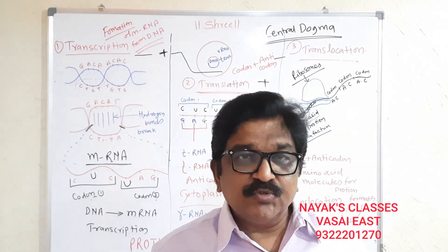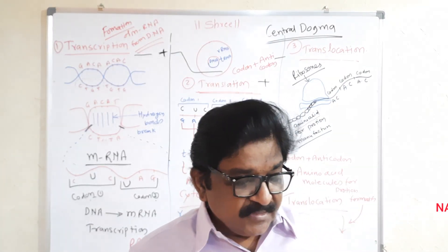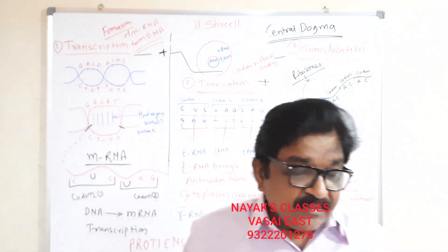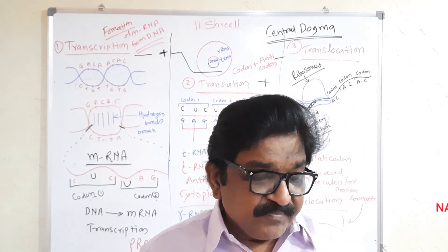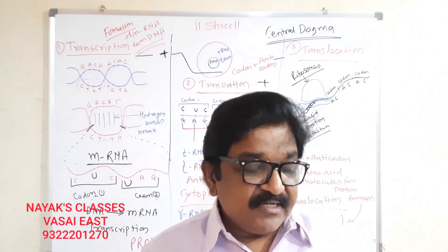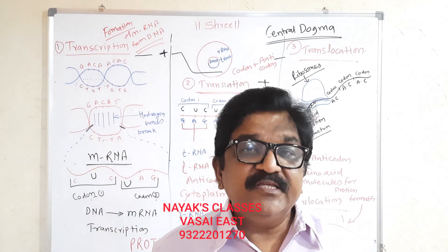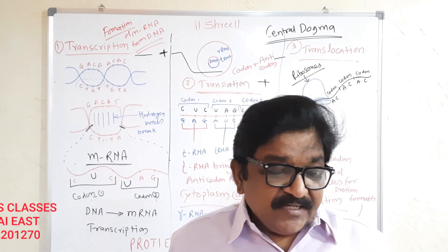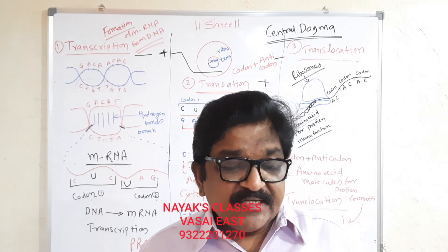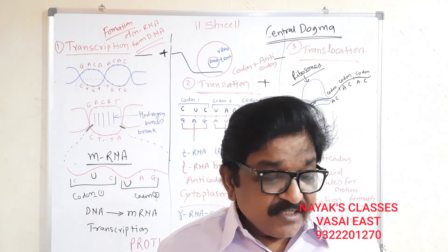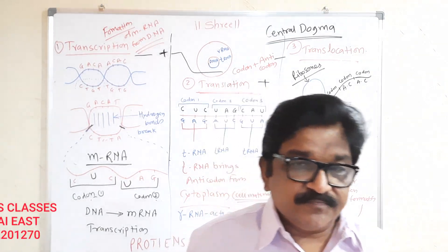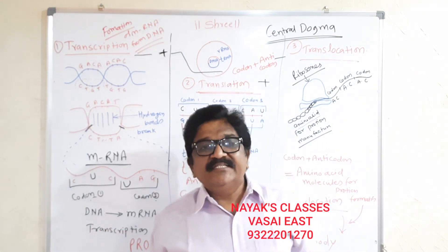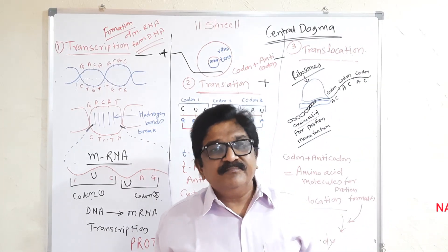Lesson number one of Science 2: there is a spelling mistake here — it says 'deity' but it should be 'heredity,' please correct it. You know that heredity is the transfer of biological characteristics from one generation to another via genes. Genes are situated in DNA, which we have learned in previous standards.